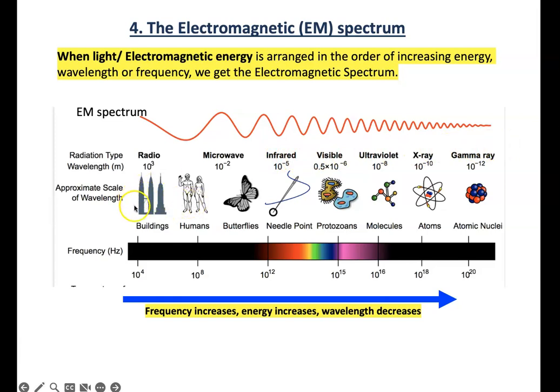And here's an approximate scale of a wavelength. This is the size of a human in the middle, butterflies, needlepoint, a single celled eukaryotes, molecules, and then atoms. And then finally, gamma rays, each gamma ray wavelength is the size of an atomic nucleus. Now we all know how small that is, right?